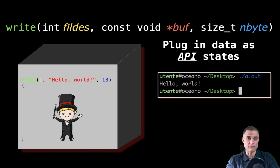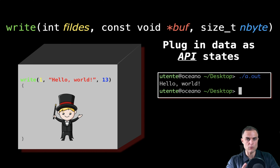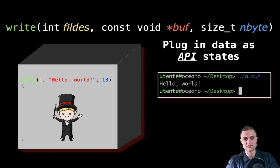As you can see from the image, I have my black box with the magician inside, and I plug all the data required by the API. The first value is 1 — you will know what that is later. The second is a buffer, which is the string constant 'hello world', a series of characters. The third is 13, which is 13 bytes — indeed there are 13 characters in my buffer. I run it and boom, I have 'hello world' on my display.